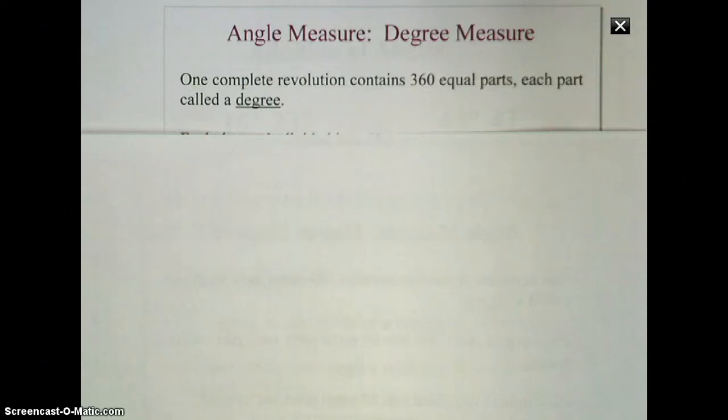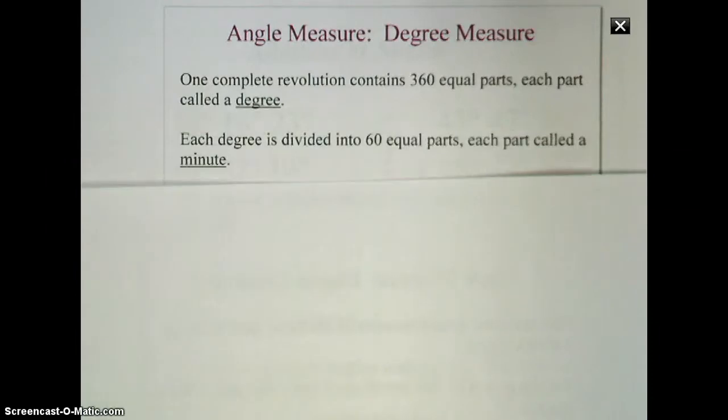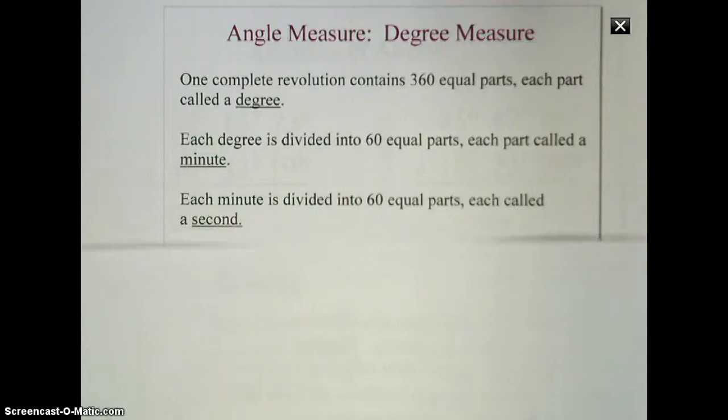However, we can divide a degree into smaller portions. Each degree can be divided into 60 equal parts. Each of these single parts are called minutes. Within that, we can take a minute and split it into 60 equal parts, and we call that a second.